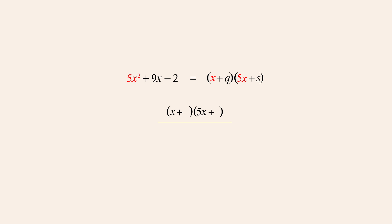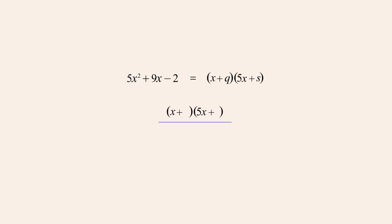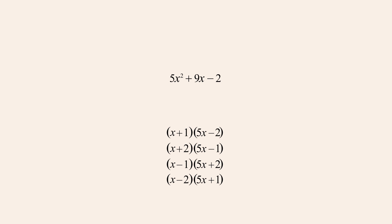We could also have reversed the signs, making another table with x-terms of negative x and negative 5x. However, we would still end up with the same pairs of linear factors with all signs reversed, producing the same solutions to the quadratic equation. Under this table heading we list all the possible pairs of factors whose product of constant terms is negative 2: positive 1 and negative 2, positive 2 and negative 1, negative 1 and positive 2, and negative 2 and positive 1. We now have four pairs of factors to test to see if the sum of outer and inner products is 9x.